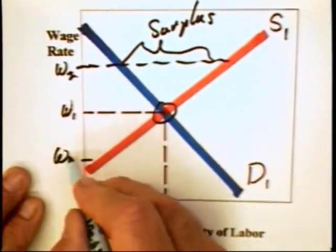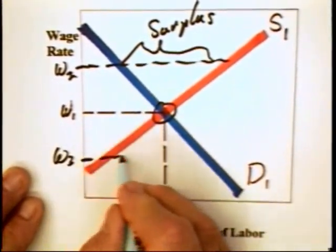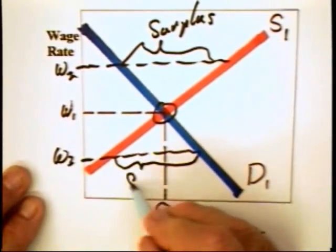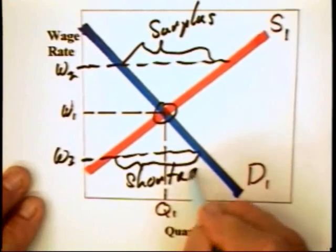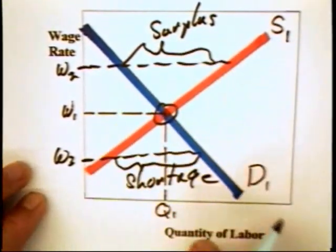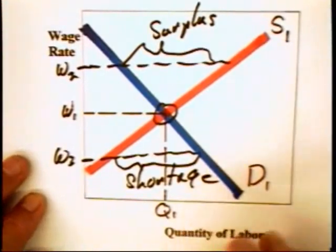We know that if the wage rate is below that, you're going to have a shortage of labor, and the wage rate is going to be bid up to W1 quantity Q1.